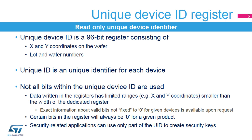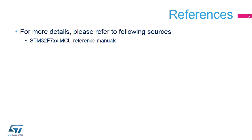As each record within the unique identifier has a given range, like the X and Y coordinates, not all the bits in the device ID are used. This is important for security-related purposes, where the number of bits used is an important parameter. Such security applications can only use part of the device ID and should avoid using the fixed bits. For detailed information, please refer to the device's reference manuals and data sheet.